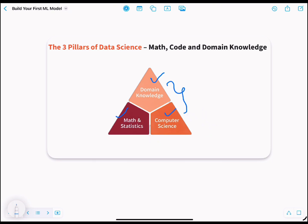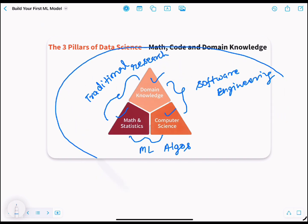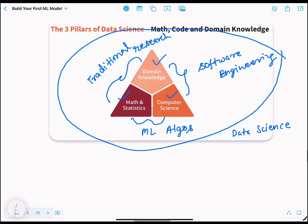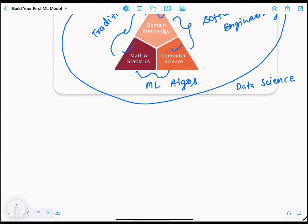The combination of domain knowledge and computer science is software engineering. The combination of math and statistics and computer science is machine learning algorithms. And the combination of math and domain knowledge is traditional research. So these three fields together create the magic of data science. You don't need to be an expert in all three - basic understanding of each is enough to get started.